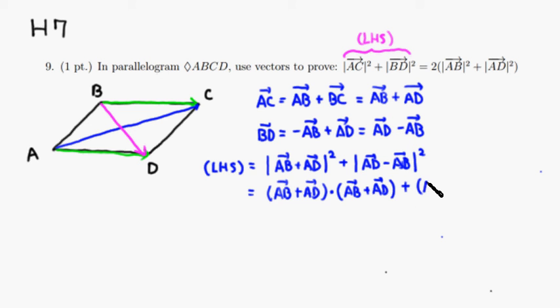The second term is, again, dot product with itself. So vector AD minus vector AB dot product with itself.